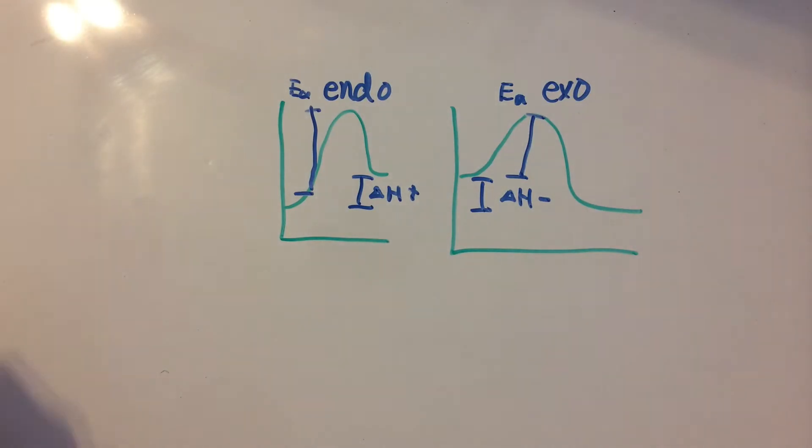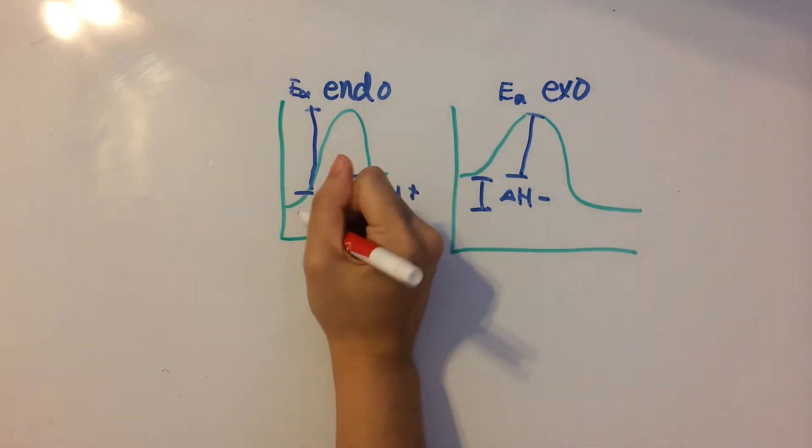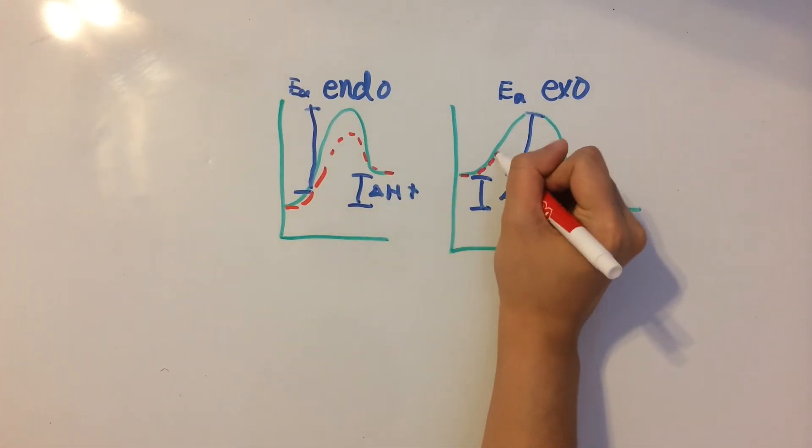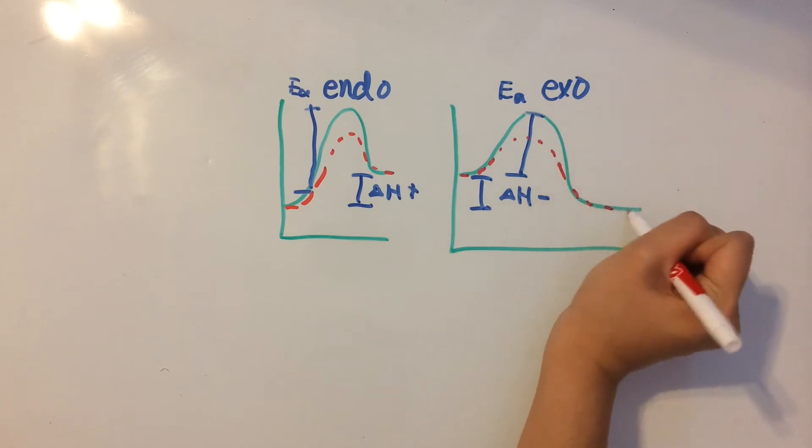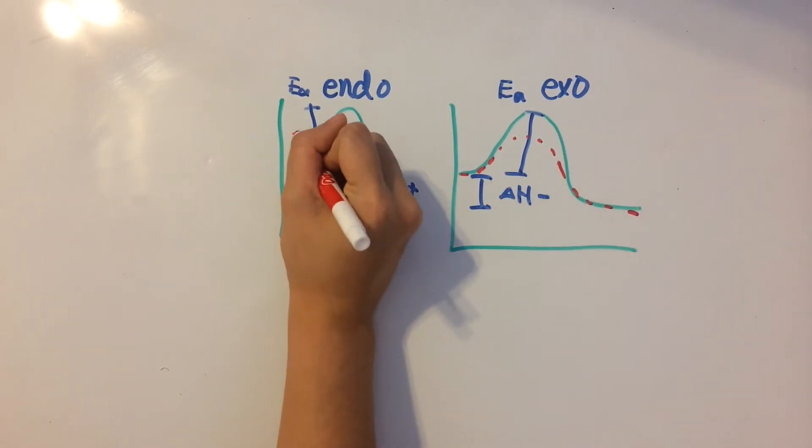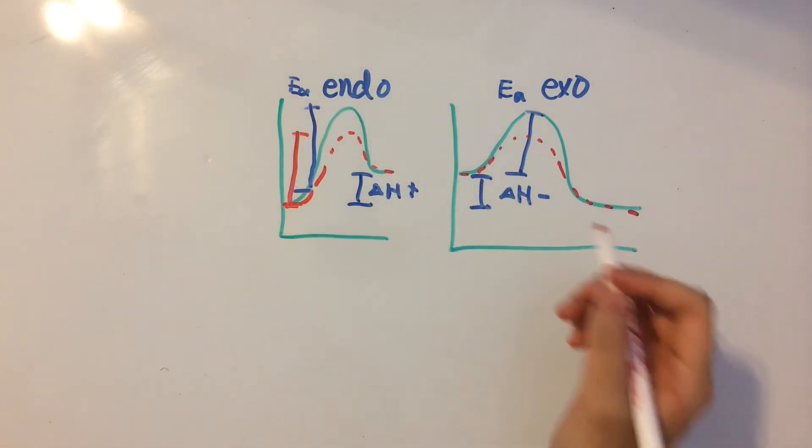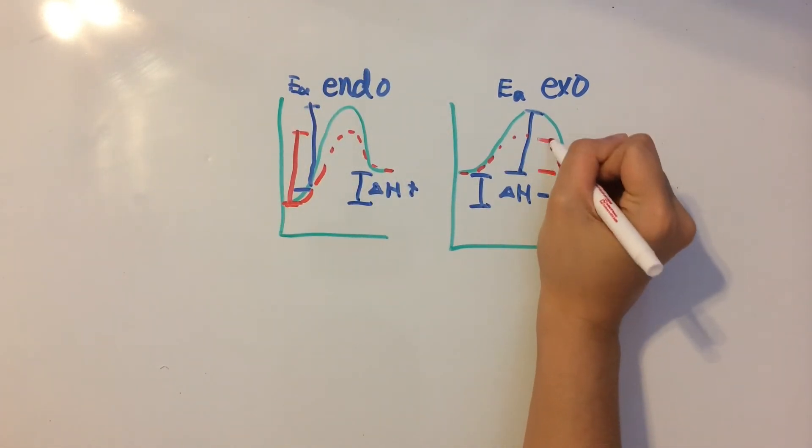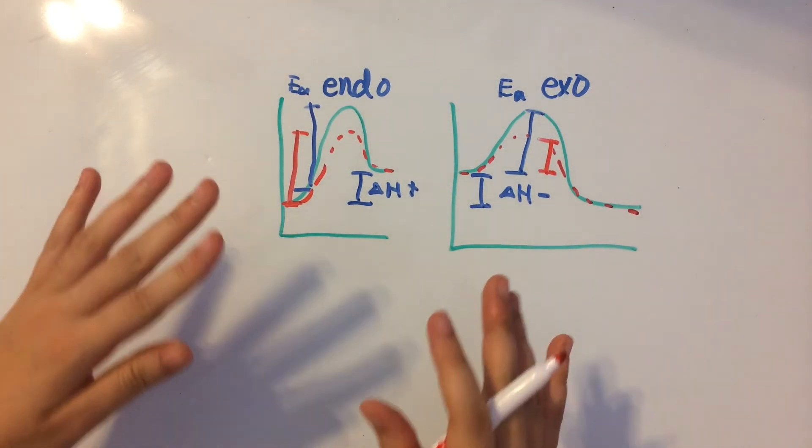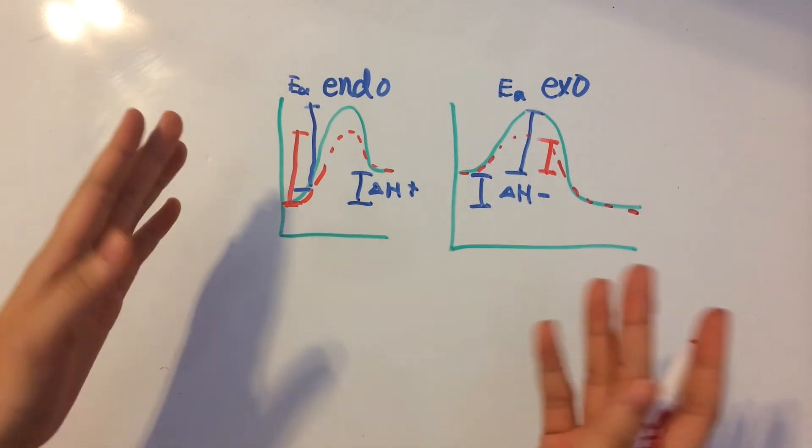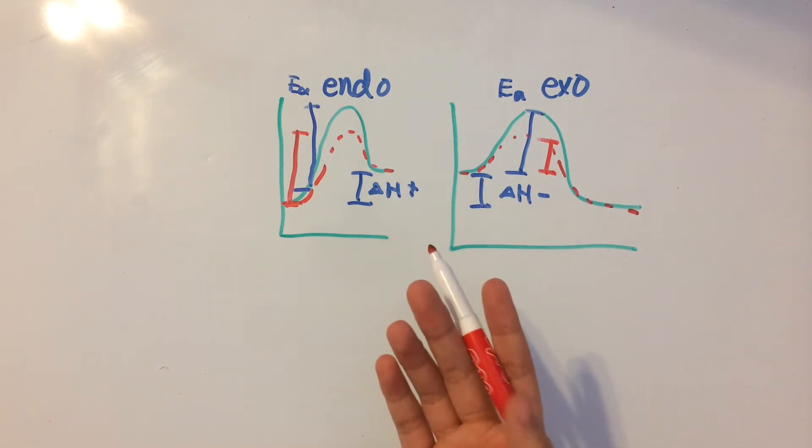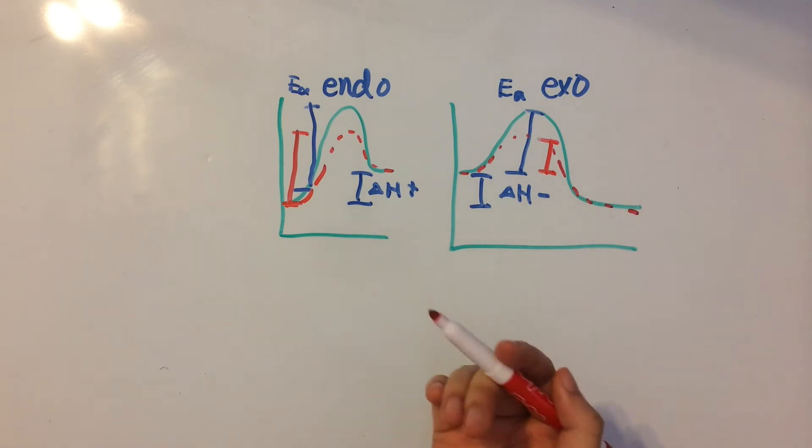So if we introduce a catalyst into the reaction, the graph is going to change into something like this, so that you can see that the activation energy is less than what it first was. So using a catalyst decreases the amount of activation energy needed to complete the reaction. So basically, using a catalyst is going to make the reaction occur faster and easier.